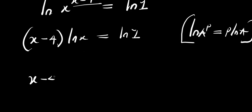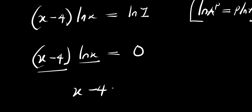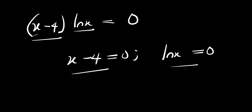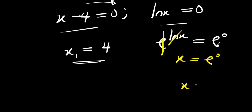So we have (x minus 4) times natural log x equals 0, since natural log of 1 is 0. This means we equate each factor to 0: x minus 4 equals 0, giving x equals 4, and natural log x equals 0, giving x equals 1. We still end up with the same two values.